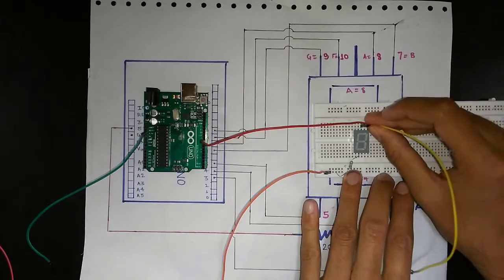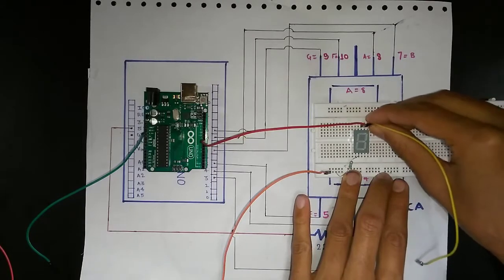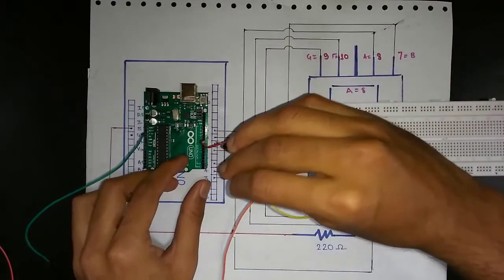Take another wire, insert it into the B segment and connect it on the 7th port.